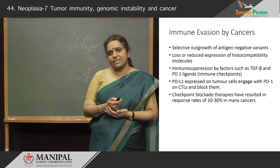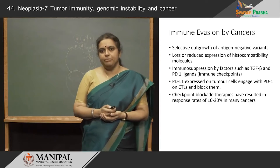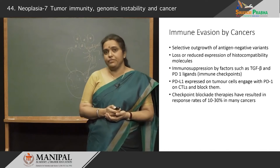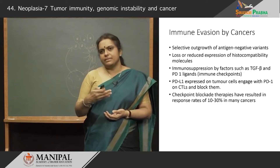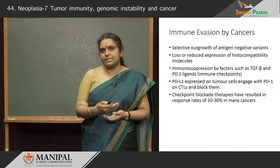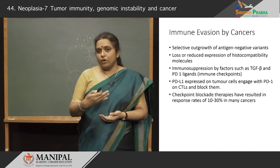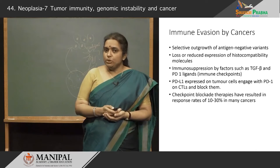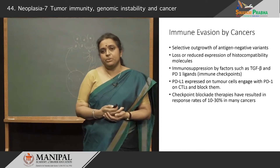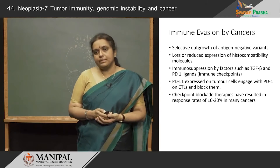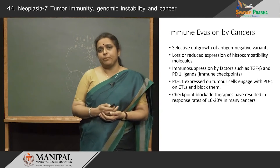Given this highly specific mechanism, how do cancers evade it? There are many ways cancers overcome immune mechanisms. One is by selective outgrowth of antigen-negative variants — cancers continuously evolve, and subclones form which are more resistant to the immune responses mounted against cancer. They selectively form antigen-negative variants or may lose or reduce the expression of histocompatibility molecules so that antigens are not effectively presented to dendritic cells. There may also be factors secreted such as TGF-beta and PD-1 ligands, which have emerged as very important immune checkpoints in cancerous cells.